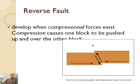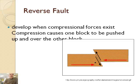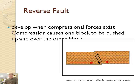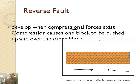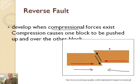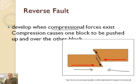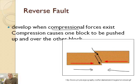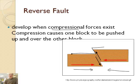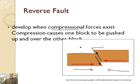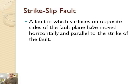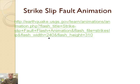The second type is called a reverse fault — it's the reverse of a normal fault. It develops when compression forces exist. Notice how the red arrows point towards each other. Compression causes one block to be pushed up and over the other block — this is how you get hanging cliffs. Imagine seeing what this looks like out in nature. A strike-slip fault is a fault in which the surfaces of opposite sides of the fault plane have moved horizontally and parallel to the strike of the fault. Let's take a look at an animation that helps explain it.